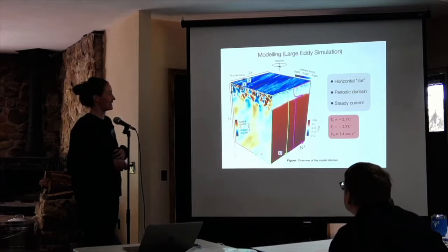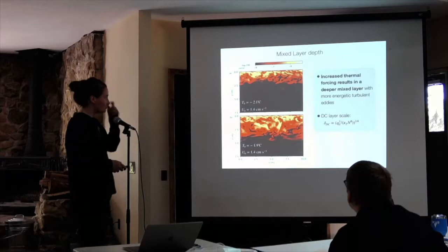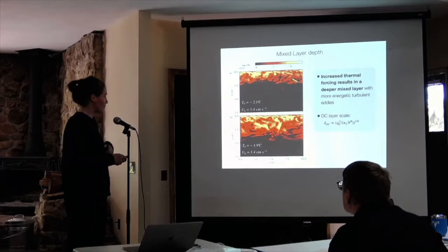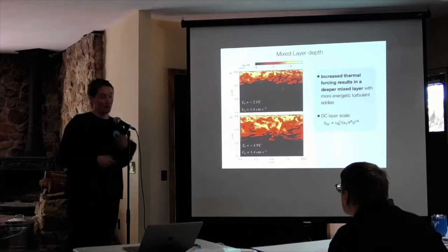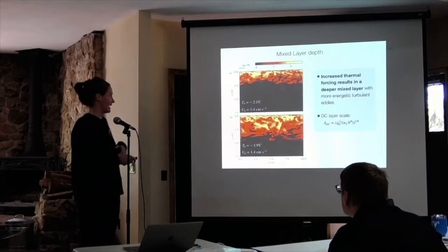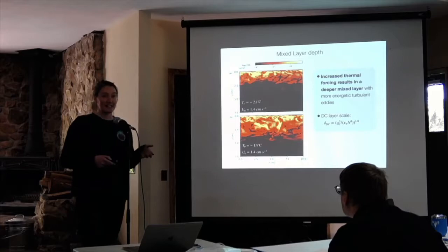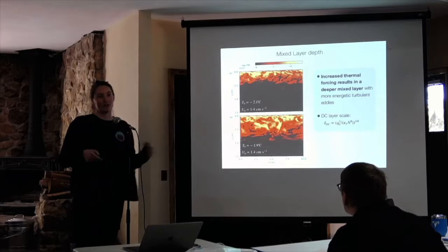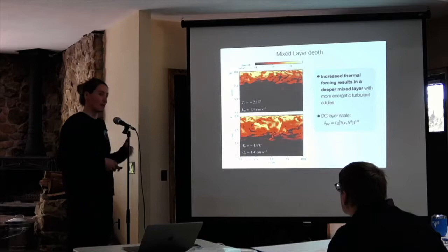We can also shed light on the processes happening at that site. To address whether this is a controlling factor on mixed layer depth, we vary the far-field temperature. When we increase the temperature from minus 2.1 to minus 1.9 degrees, we almost double our mixed layer depth and get much more energetic turbulent eddies. We can predict the depth of this mixed layer using a layer scale for diffusive convection, which depends on the background stratification and the heat flux at the surface from melting.